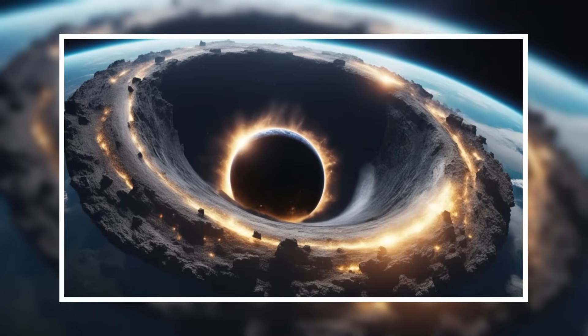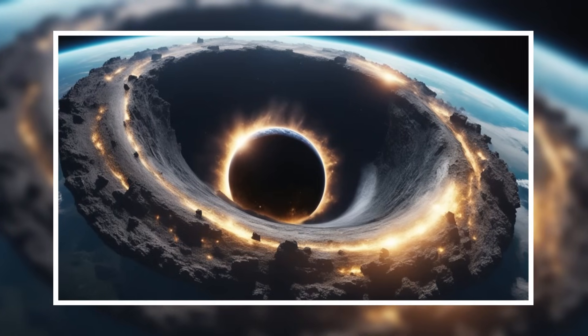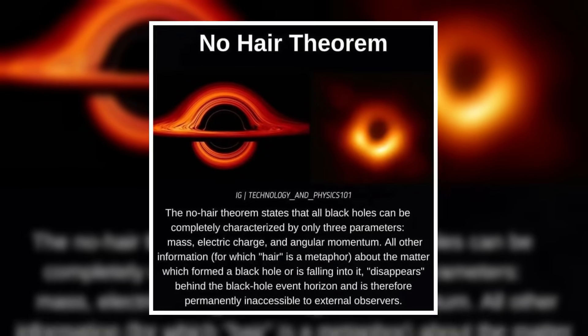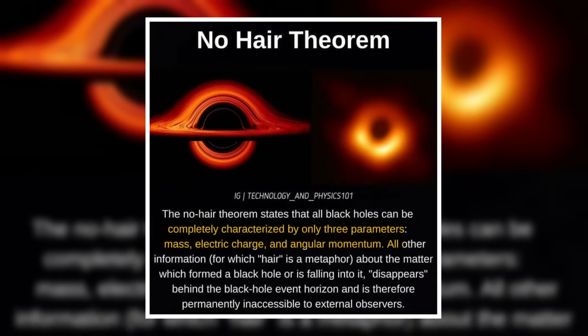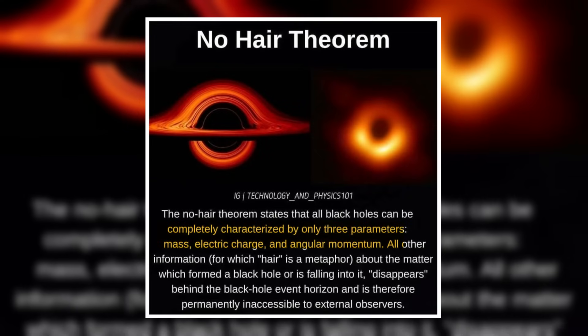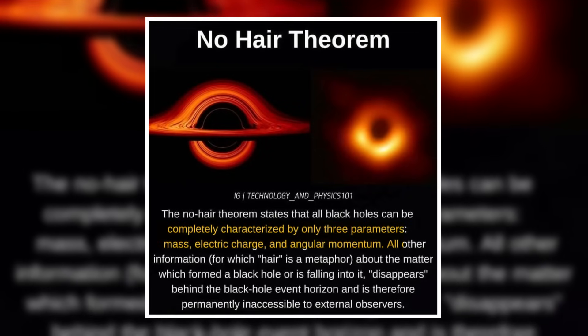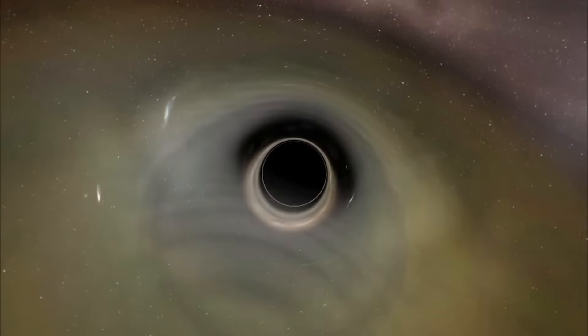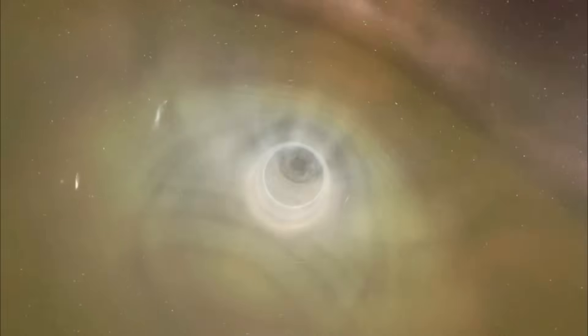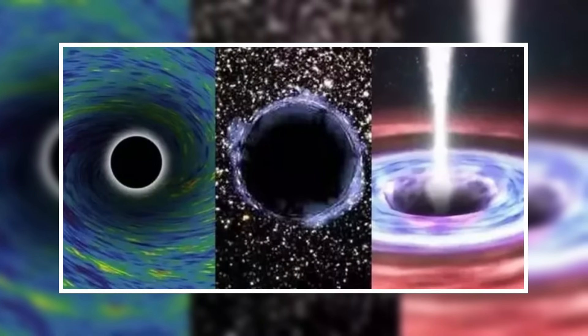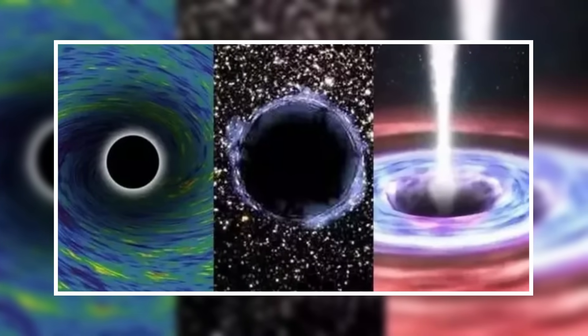The no-hair theorem says that a black hole only has three qualities that can be measured: mass, electric charge, and angular momentum once it becomes stable after it forms. Black holes are simple, but their complexity is hidden by their simplicity. This is why it is hard to tell them apart, even if they have the same physical properties.